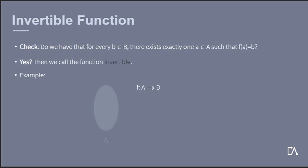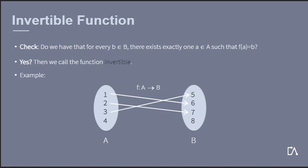For example, set A contains the numbers from 1 to 4, and set B contains the numbers from 5 to 8. We assume that our function f maps 1 to 6, 2 to 7, 3 to 5, and 4 to 8. We see that for every element in B, there is exactly one element in A such that f(a) = b. Therefore, our function is invertible.